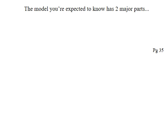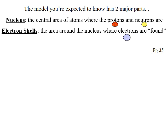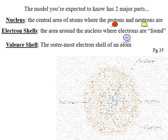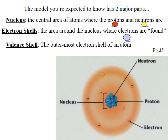The model you're expected to know for biology has two main parts. First, the nucleus — the central area of the atom where you find the protons and the neutrons. Second, the electron shells — the area, mostly empty space, around the nucleus where the electrons are found. The outermost electron shell, the furthest one from the nucleus, is called the valence shell. That's the outermost shell with an actual electron in it. In this picture, the valence shell would be this outer shell; the inner orbital is not the valence shell.